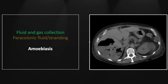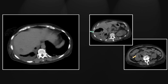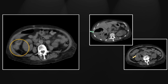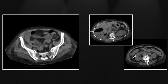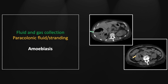Our next case is amebiasis resulting in a large, ripe hepatic abscess. You see here a unilocular collection of gas and fluid, highly destructive and pretty characteristic of a hepatic abscess from amebiasis. Lower down in the abdomen, you can appreciate some pericolonic stranding, denoting the amebic colitis as the origin of this infection. You can appreciate that unilocular destructive collection of fluid and gas, and the pericolonic stranding. So that is amebiasis with colitis and a resultant hepatic abscess.